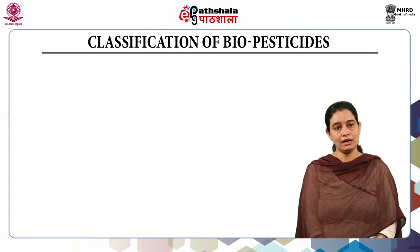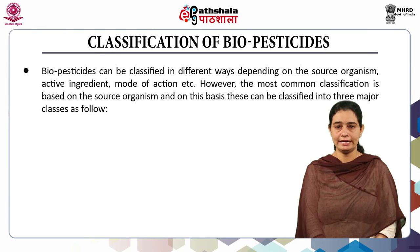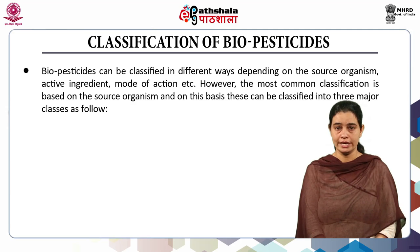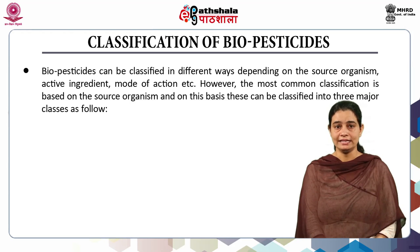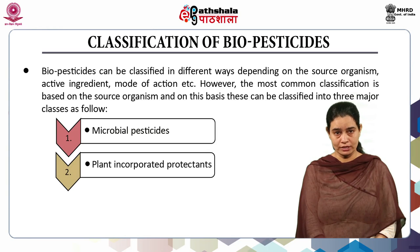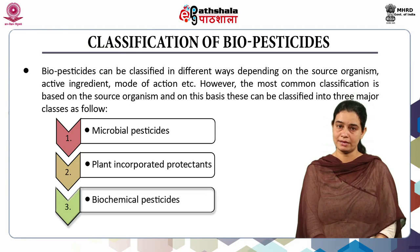Coming to the classification of biopesticides, they can be classified on different bases — based on the source organism, active ingredient, their mode of action, etc. However, the most common classification is based on the source organism, and on this basis they can be classified into three major classes: microbial pesticides, plant-incorporated protectants and biochemical pesticides.